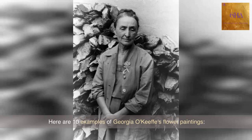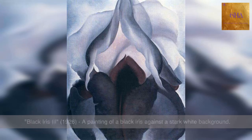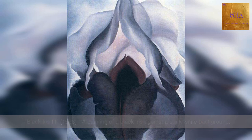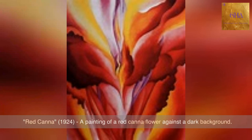Here are 10 examples of Georgia O'Keeffe's flower paintings. Black Iris 3, 1926 — a painting of a black iris against a stark white background. Red Canna, 1924 — a painting of a red canna flower against a dark background.